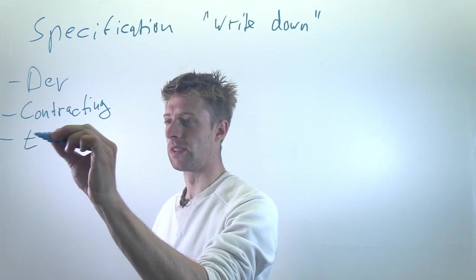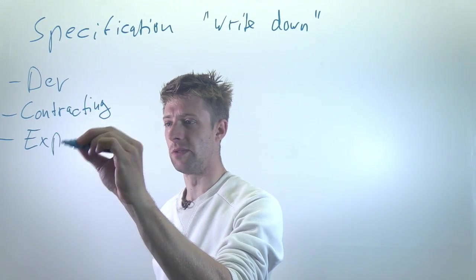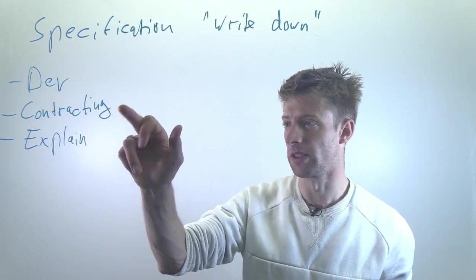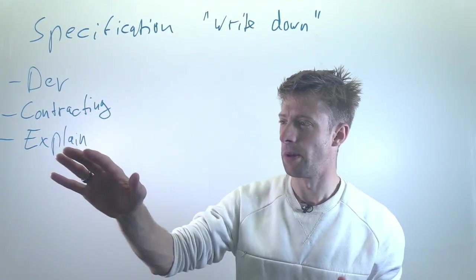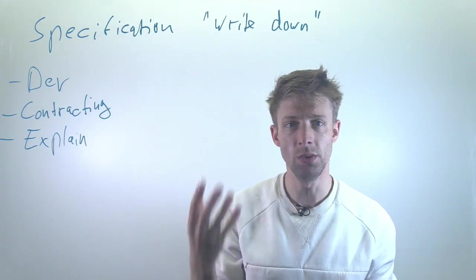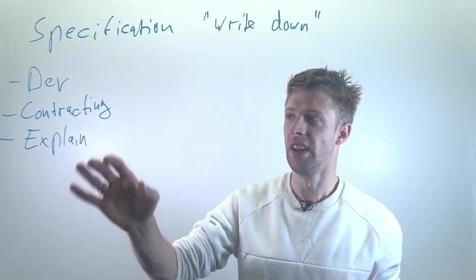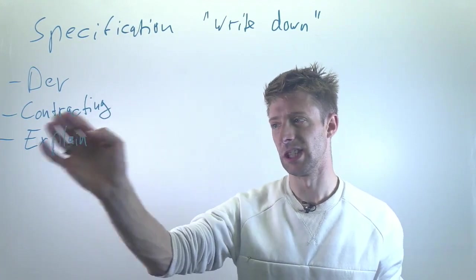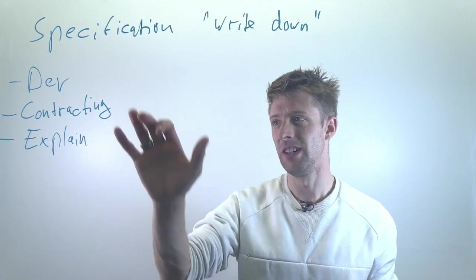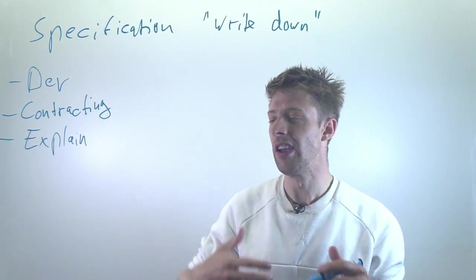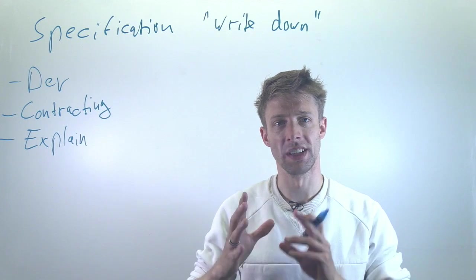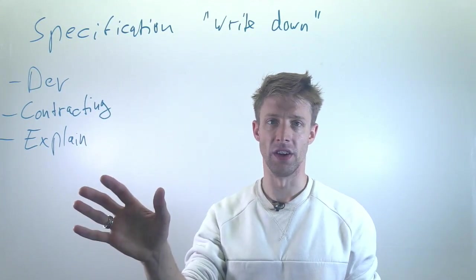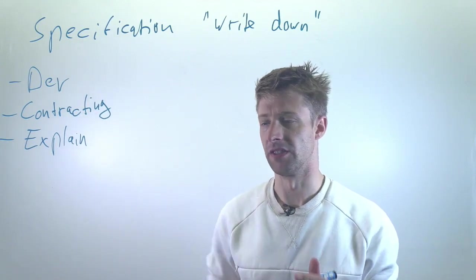Sometimes you need requirements written down to explain them to other stakeholders — either for contracting with a client, or to explain them to a user. A user often does not have the same knowledge as your developers, so you may need to avoid technical terminology and explain in more detail what certain functions are for. You need a completely different level of abstraction.